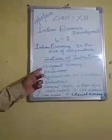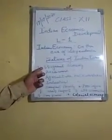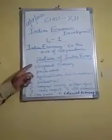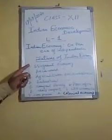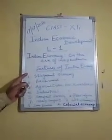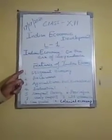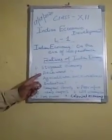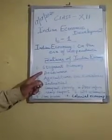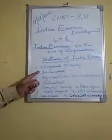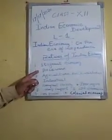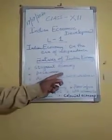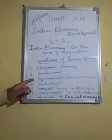The first point is stagnant economy. On the Eve of Independence, Indian Economy was completely a stagnant economy. Stagnant economy means one which shows little or no growth in income. Now, backward economy — Indian economy was a backward economy on the Eve of Independence. Backward economy is the one in which per capita income is very low.